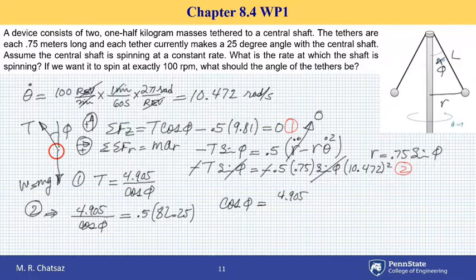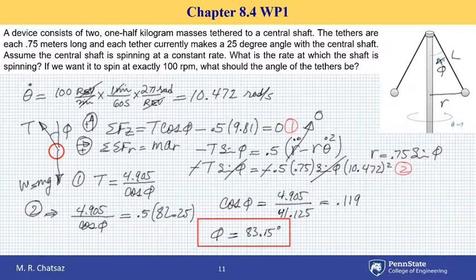Which turns out to be 0.119. Cosine is that, therefore this angle is inverse cosine of that number, which turns out to be 83.15 degrees. So if we want the rotational speed to be 100 rpm, the angle between the chord and the vertical shaft will be 83.15 degrees. Thanks for watching.